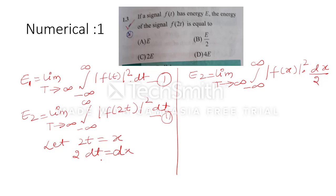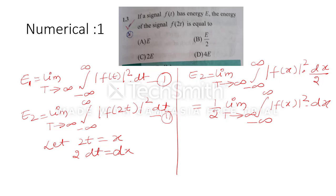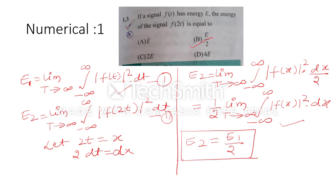When you substitute dx, it becomes dx by 2. So you can write it as the limit from minus infinity to infinity of F(x) whole squared dx, divided by 2. Comparing equation 1 and equation 2, you can say that E₂ equals E₁ by 2. So the correct answer is option B.